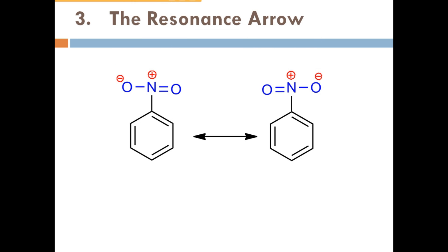The resonance arrow. This resonance is between nitrobenzene. This double headed arrow is known as resonance arrow. Nitro group is in resonance. Molecule with resonance isomerism.